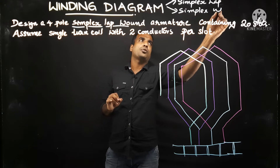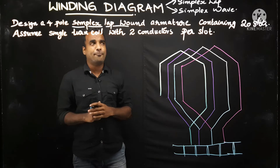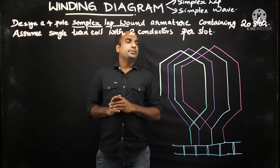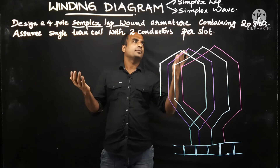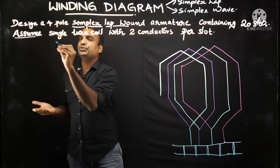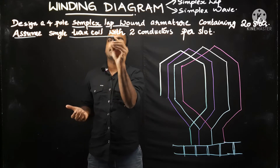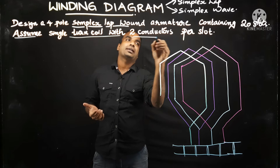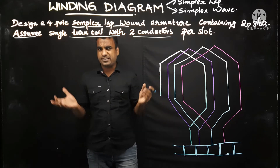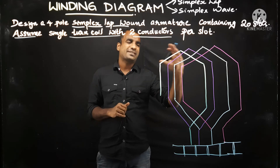In this problem, we are covering simplex lap winding. They have already given: assume single turn coil with two conductors per slot. So before going into the general rules of armature winding, let me brush up these things.